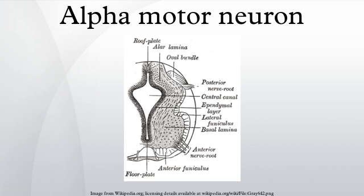The sensory input to alpha motor neurons is extensive and has its origin in Golgi tendon organs, muscle spindles, mechanoreceptors, thermoreceptors, and other sensory neurons in the periphery. These connections provide the structure for neural circuits that underlie reflexes. There are several types of reflex circuits, the simplest of which consists of a single synapse between a sensory neuron and an alpha motor neuron. The knee-jerk reflex is an example of such a monosynaptic reflex. The most extensive input to alpha motor neurons is from local interneurons, which are the most numerous type of neuron in the spinal cord. Among their many roles, interneurons synapse on alpha motor neurons to create more complex reflex circuitry.